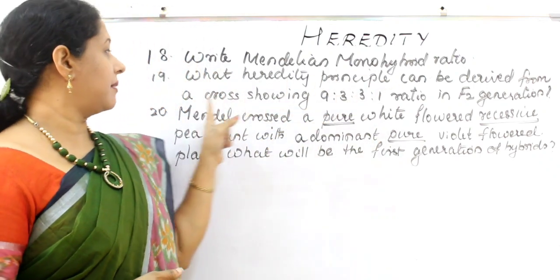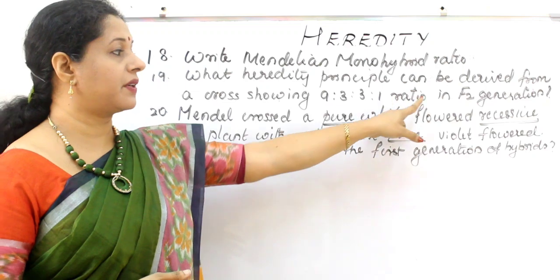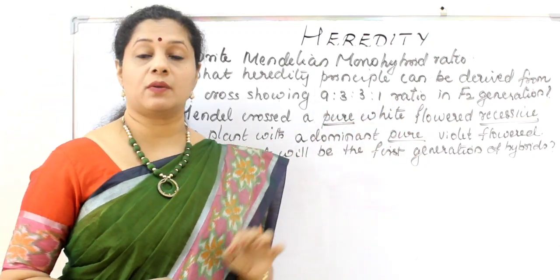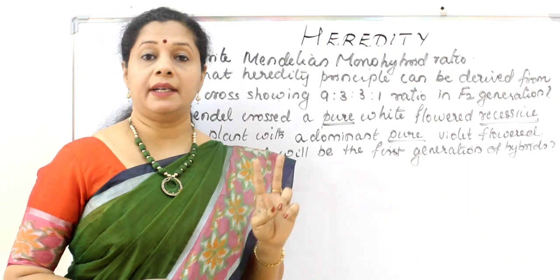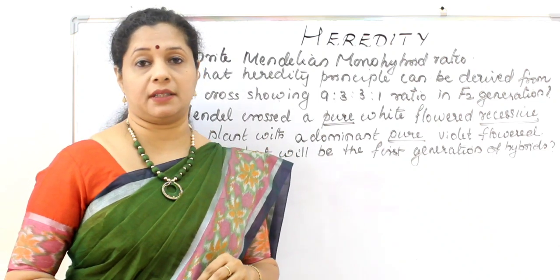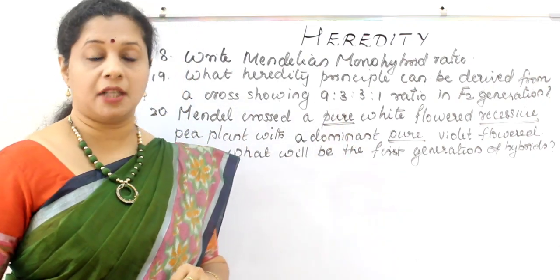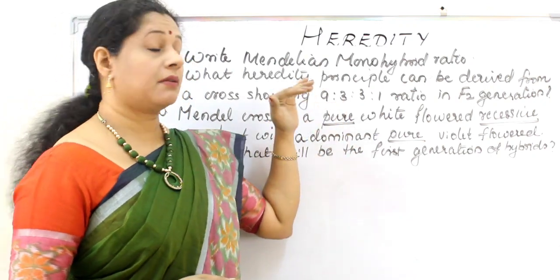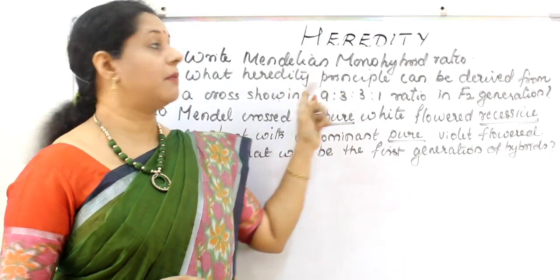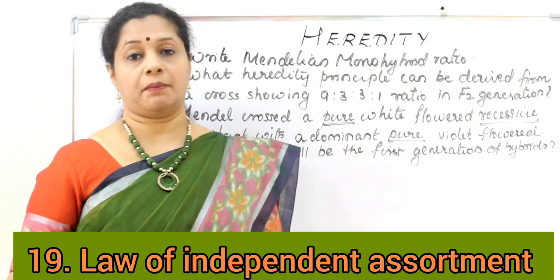What heredity principle can be derived from a cross showing a 9 to 3 to 3 to 1 ratio in the F2 generation? This ratio is the dihybrid cross phenotypic ratio — two characters are considered in the cross. This is called the dihybrid ratio, and it demonstrates the principle of independent assortment.